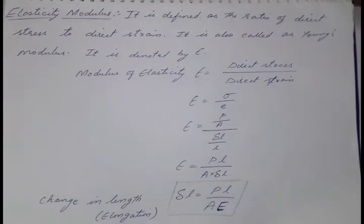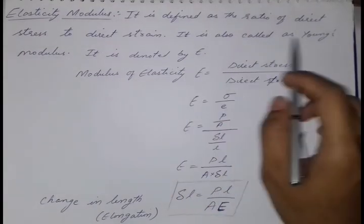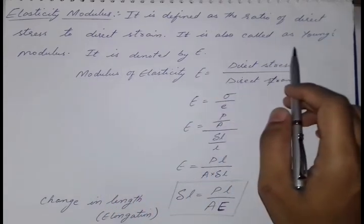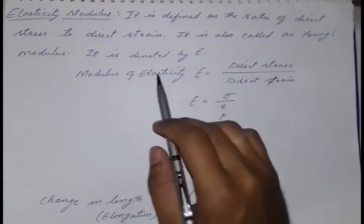Now the next one is elasticity modulus. It is defined as the ratio of direct stress to direct strain. It is also called as Young's modulus. It is denoted by capital E.